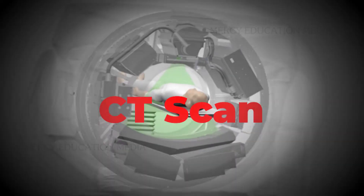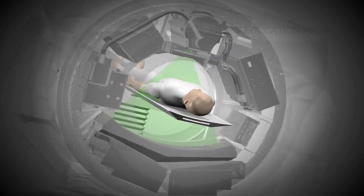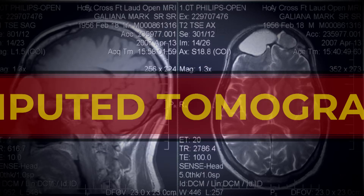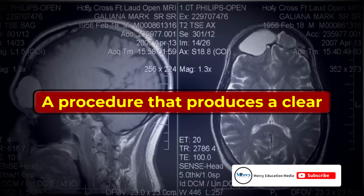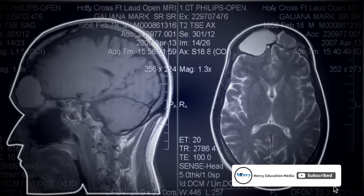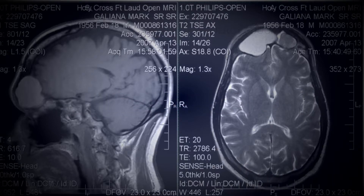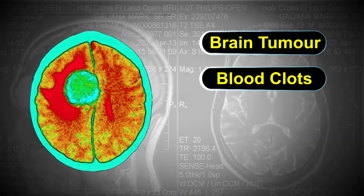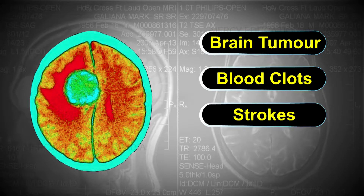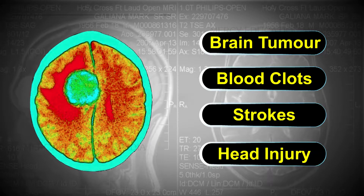What do you know about computed tomography, CT or computerized axial tomography, CAT? A CT scan is a method of taking an image of the brain. CT stands for computed tomography, a procedure that produces a clear two-dimensional image of the brain that shows abnormalities such as brain tumors, blood clots, strokes, or damage due to head injuries.